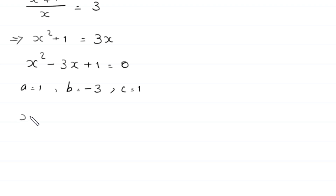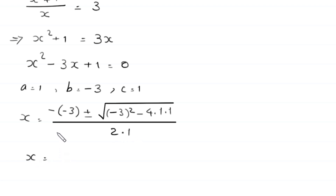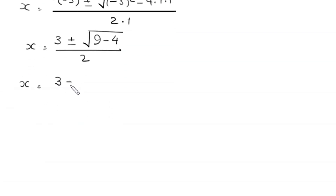According to the quadratic formula, x is equal to negative b, which is negative negative 3, plus or minus square root of b squared, which is negative 3 squared, minus 4 times a times c, which is 4 times 1 times 1, divided by 2 times a, which is 2 times 1. This simplifies to x equals 3 plus or minus square root of 9 minus 4, which is 5, divided by 2. So x equals 3 plus or minus root 5, all over 2. These are the two values x₁ and x₂, the two solutions of this equation.